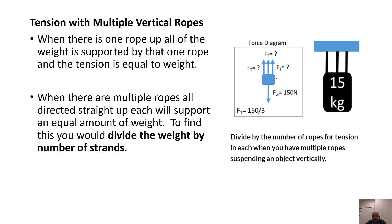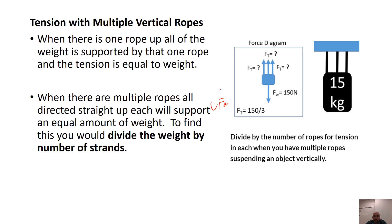When you have multiple ropes directed straight up, we divide the total tension by the number of strands. With a single rope, the full weight goes into that one rope's tension. With multiple ropes equally spaced and directed up, we split the load. For example, with three ropes and a 150 newton weight, each rope supports 150 divided by 3, which is 50 newtons each. If ropes are at an angle, we handle that differently.